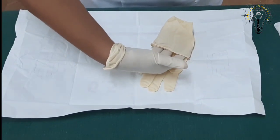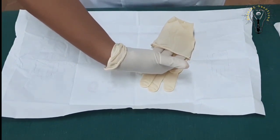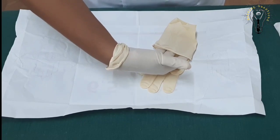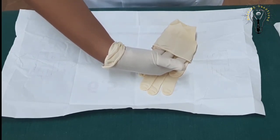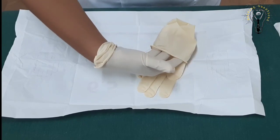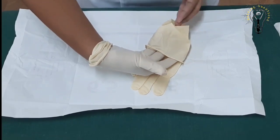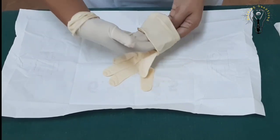Place your four fingers inside with your thumb abducted. Carefully pull the second glove over your non-dominant hand. Do not allow fingers and thumb of gloved dominant hand to touch any part of your exposed hand.